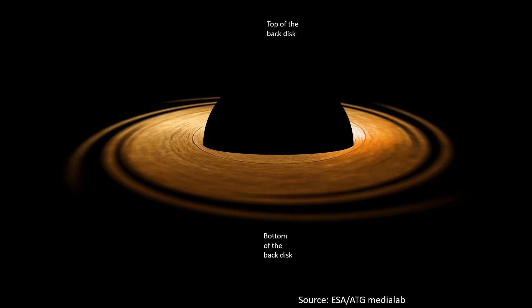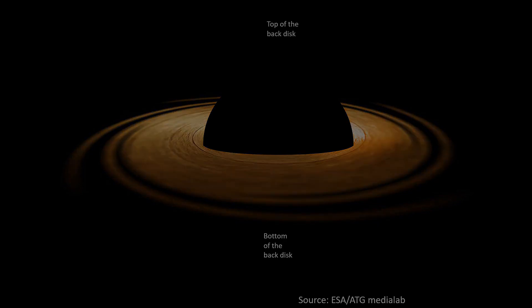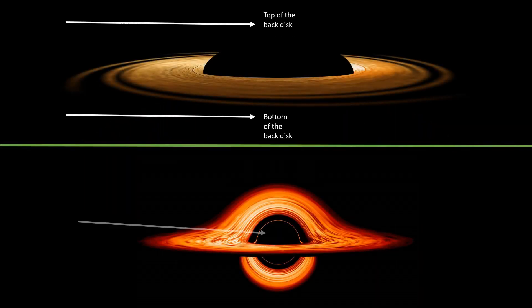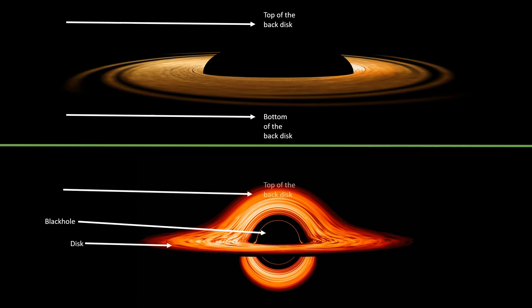Now if we compare this to the black hole picture we saw at the beginning, it is clear that this is the black hole, this is the disc, this is the top of the back disc, and this is the bottom of the back disc. Hopefully this was clear — if you have any questions, feel free to ask in the comment section below. Thanks for watching!